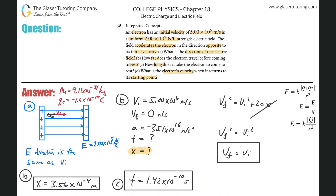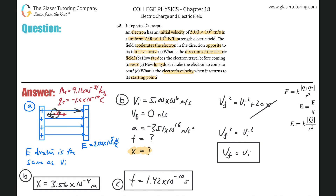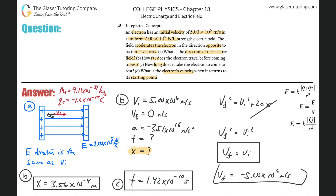Therefore the electron's velocity when it returns to its starting point will be negative 5 × 10⁶ meters per second — same magnitude as the initial velocity but in the opposite direction, based on our picture frame. That is letter D.